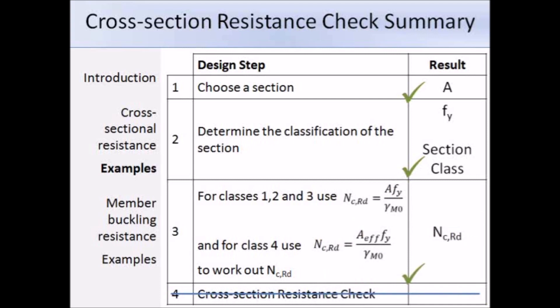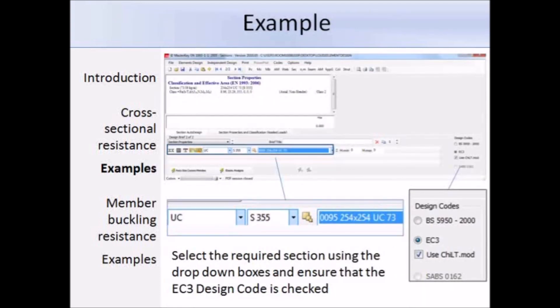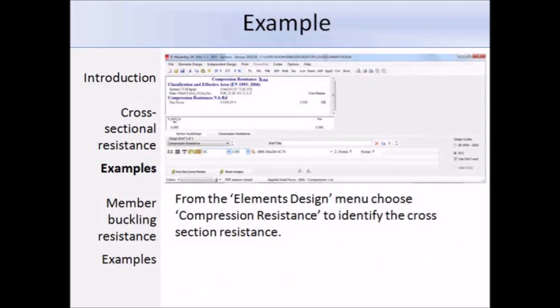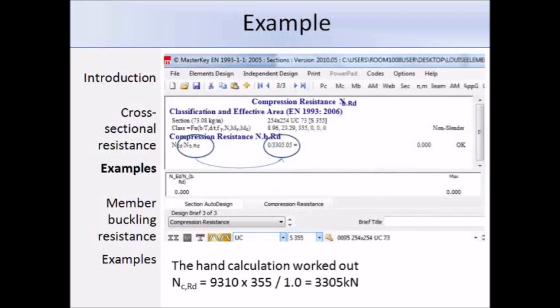Now we go through the same example using Masters 3 software. I have selected Eurocode 3 as the design code, and input a 254×254×73 UC with S355 steel. To find the section class, we choose the section properties and classification option from the element design menu — the output circles class 2, the same result as our hand calculation. To find the cross-section resistance to compression, we choose the compression resistance option from the element design menu. The screenshot shows a compression resistance of 3,305.05 kN, confirming our hand calculation. This example concludes part 1 of the lecture on compression members. Thank you for listening.